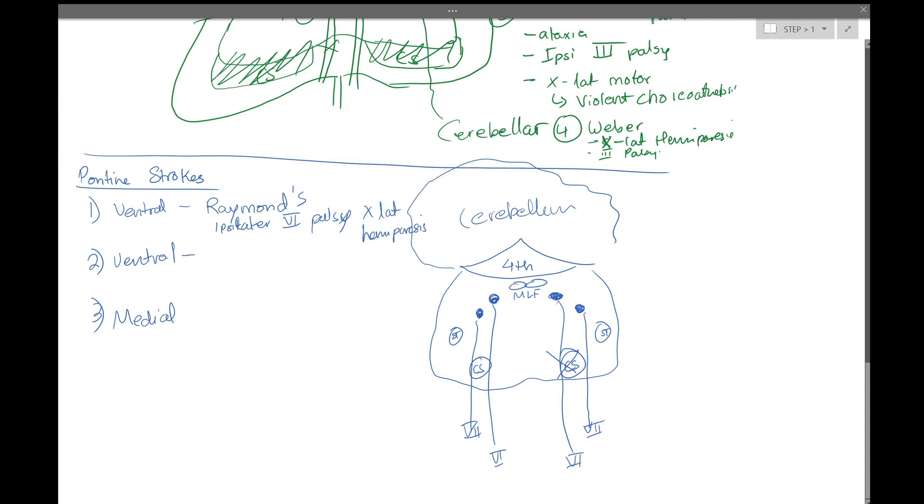The second ventral syndrome worth knowing is Millard-Gubler syndrome. Millard-Gubler is, as you can imagine, very similar to this ventral stroke, only now we also knock out cranial nerve 7. So you get ipsilateral 6 and 7 palsy, that will give you a facial droop, along with contralateral hemiparesis.